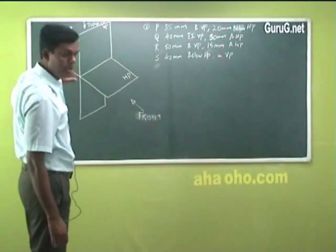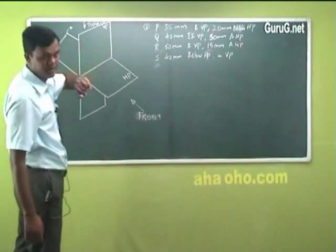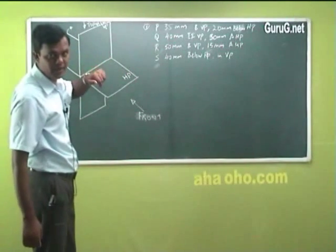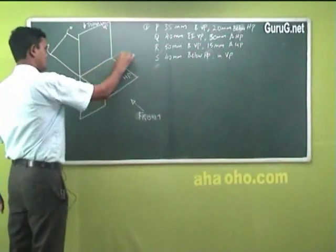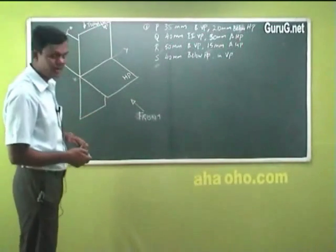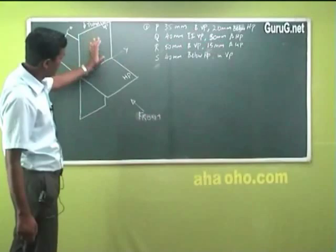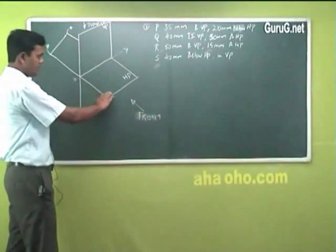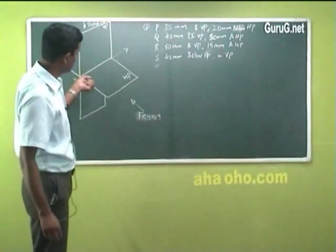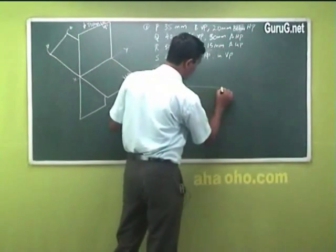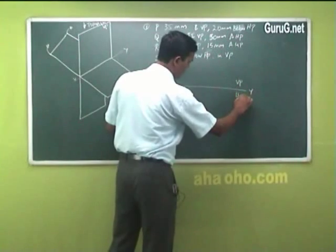Front and top view. Now, any point I told you, you will have to think in which quadrant it is based on its placement, and we have to draw it on the sheet. This line I told you is your XY line. Actually, you cannot draw on a drawing sheet in this fashion — this is just for explanation, to make you understand how a vertical plane and horizontal plane look like. When you tilt it, it becomes like this. Now I am drawing an XY line — I will write my vertical plane here and horizontal plane here.